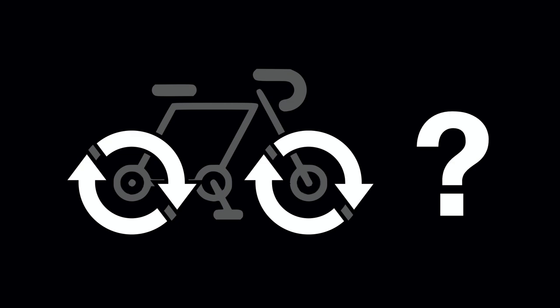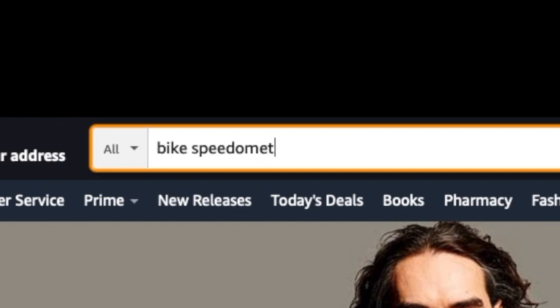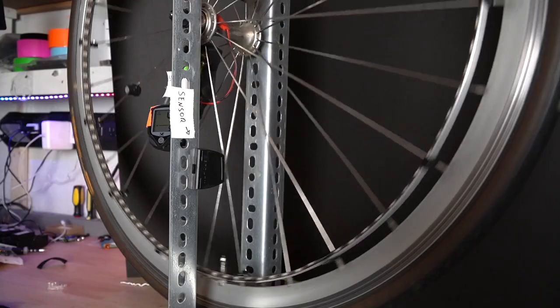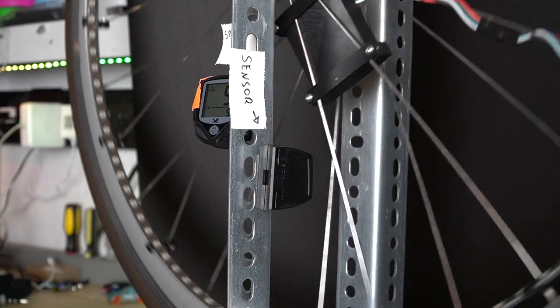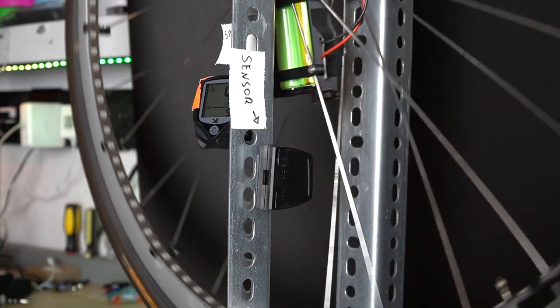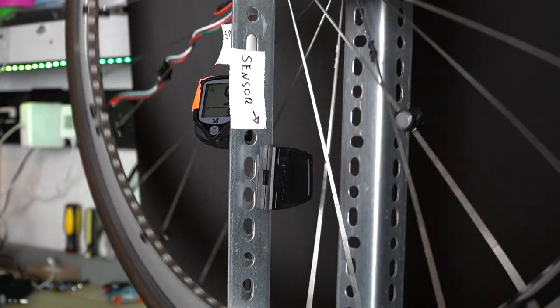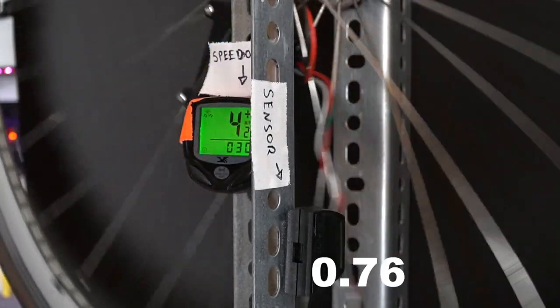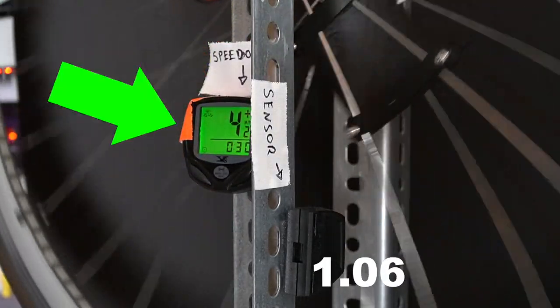So there's the first problem, getting the speed of the wheel. One way to know the speed of the wheel is how bike speedometers have been doing it for a long time. I'm using one right here for testing the wheel. You put a magnet on the wheel and you have a sensor on the fork to sense when the magnet passes by. This way, the speedometer can get the seconds per revolution and convert that to miles per hour.